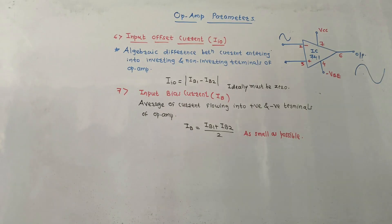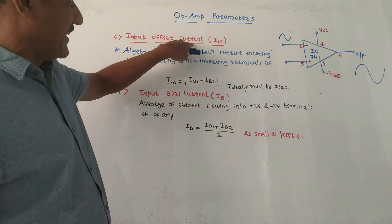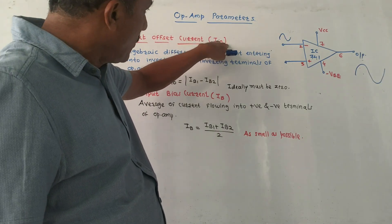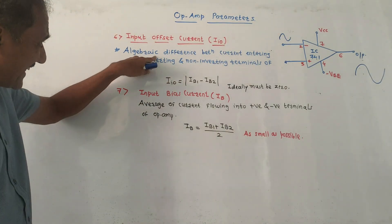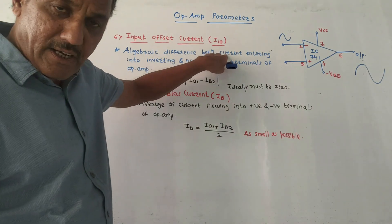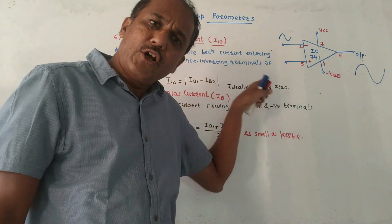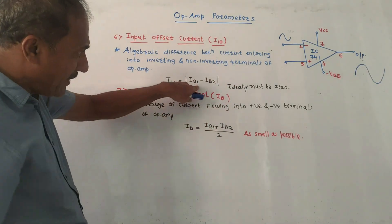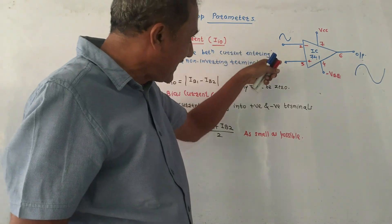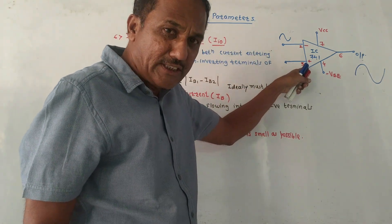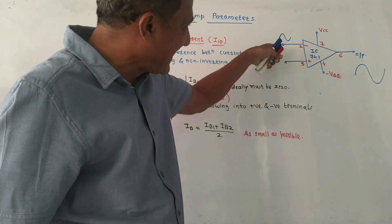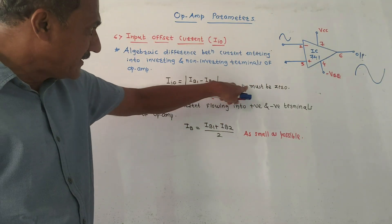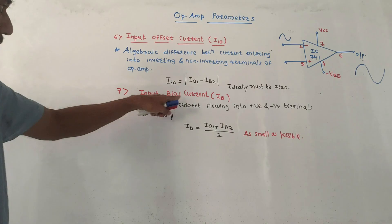The next parameter is input offset current, denoted IIO — the suffix 'I' stands for input, 'O' stands for offset. It is basically the algebraic difference between the current entering the inverting and non-inverting terminals of the op-amp: magnitude of IB1 minus IB2, where IB1 is the current entering the positive (non-inverting) terminal and IB2 is the current entering the negative (inverting) terminal. Ideally this value must be zero.